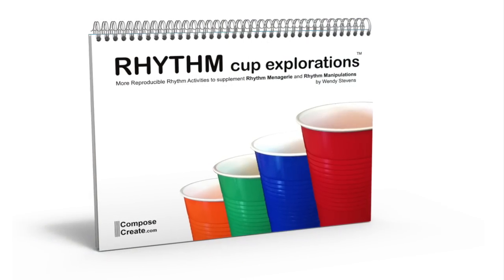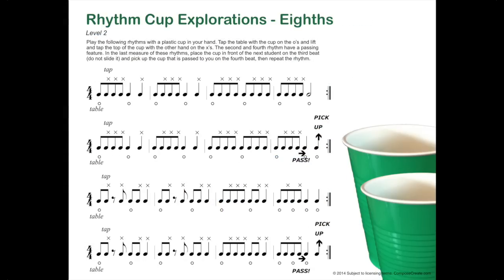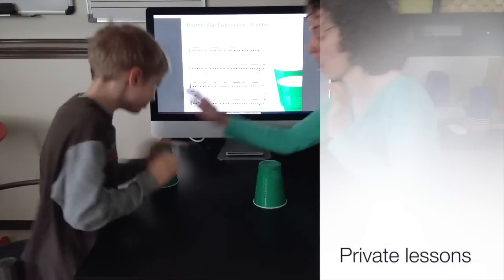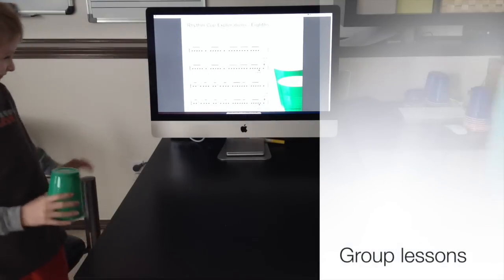Rhythm Cup Explorations comes with four units and three levels in each unit. You can use these reproducible pages in private or group lessons, or with beginning and advanced students.